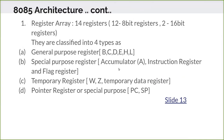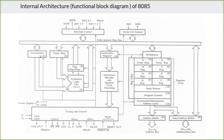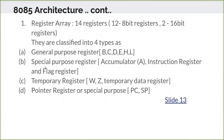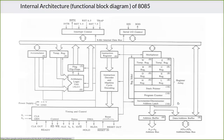The special purpose registers include the accumulator, instruction register, and flag register. These come under the special purpose register group. Then the temporary registers — W and Z — are temporary data registers, also used internally. Then the pointer and special purpose registers, which are the program counter and stack pointer — they point to a memory address.